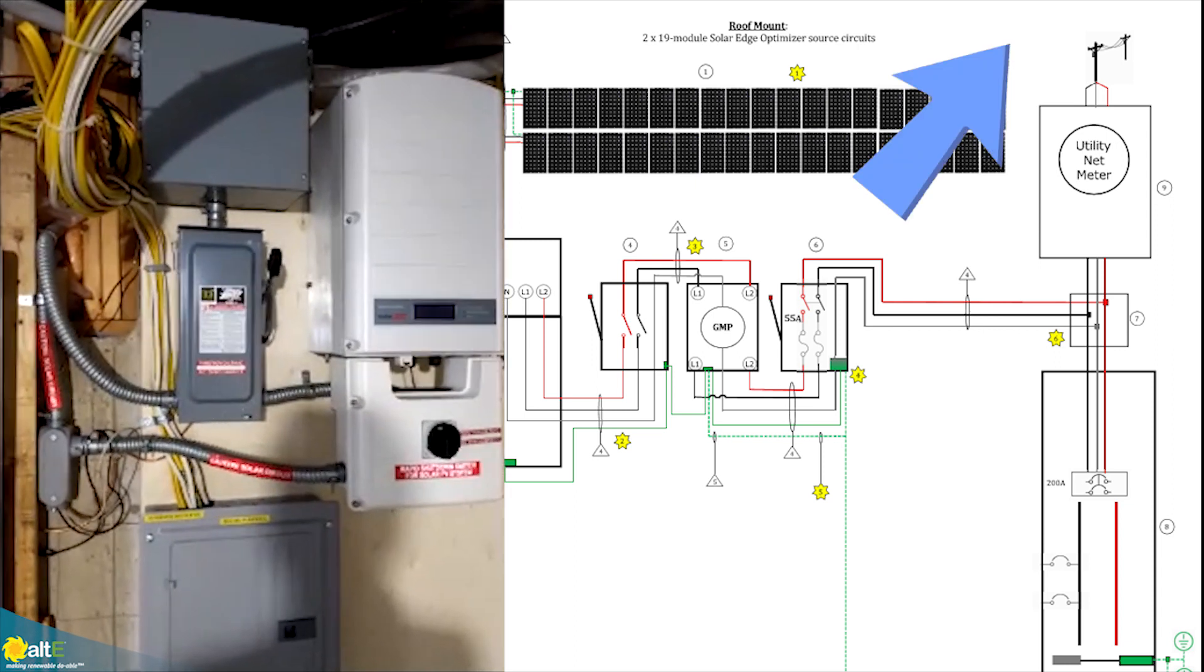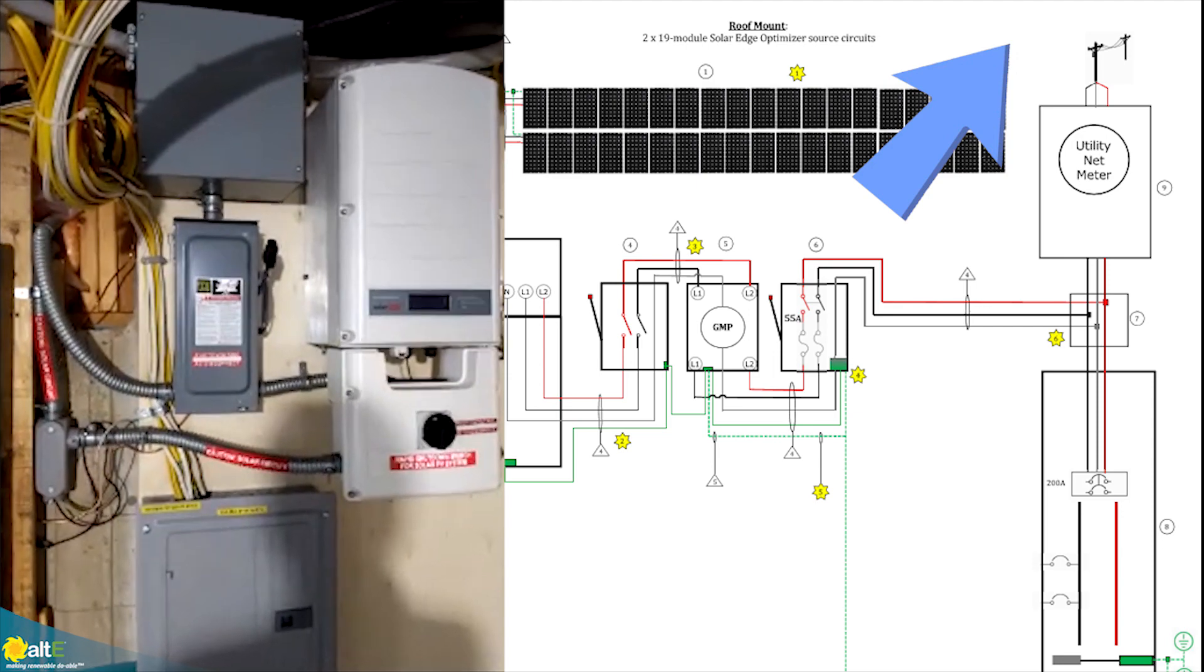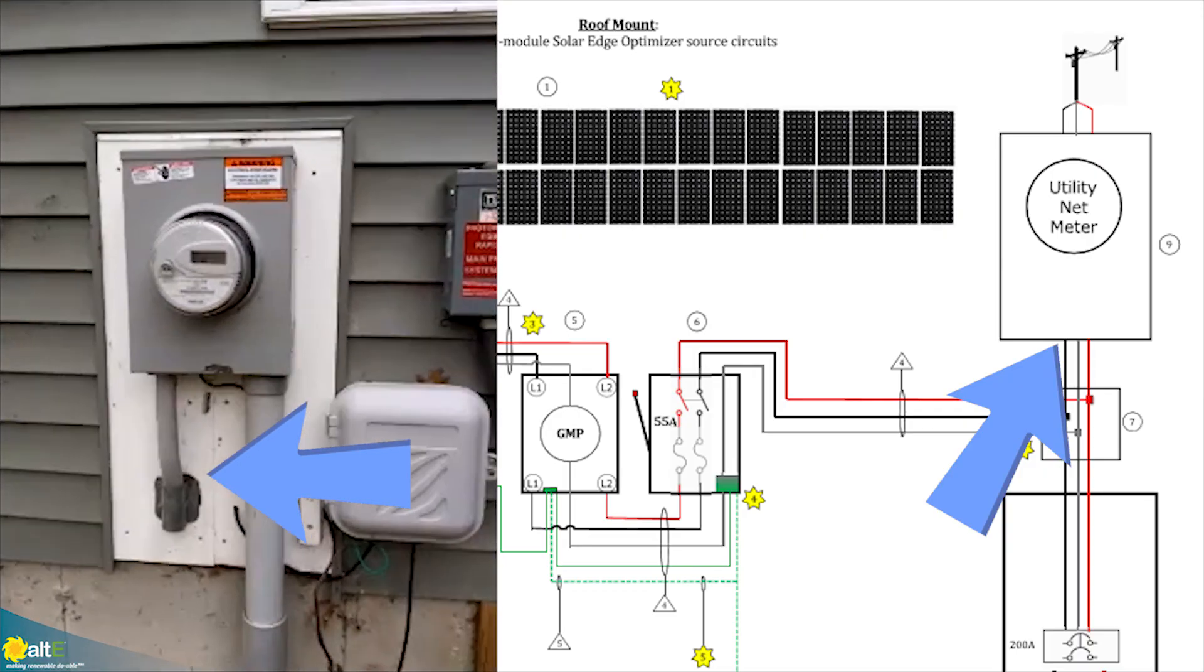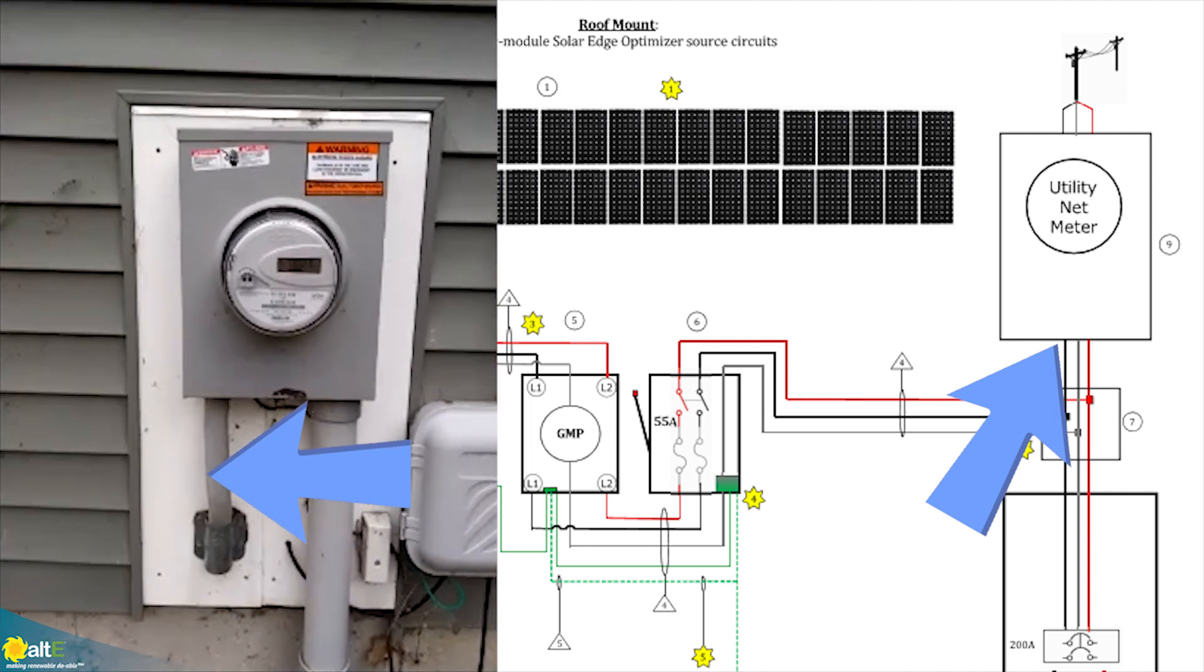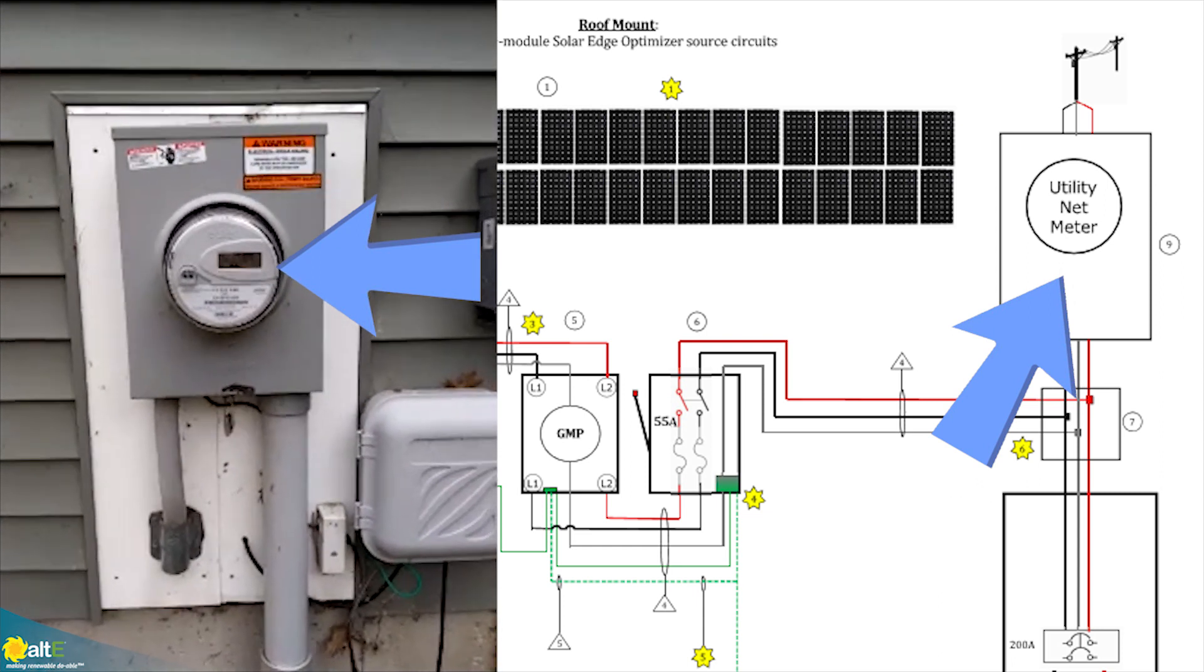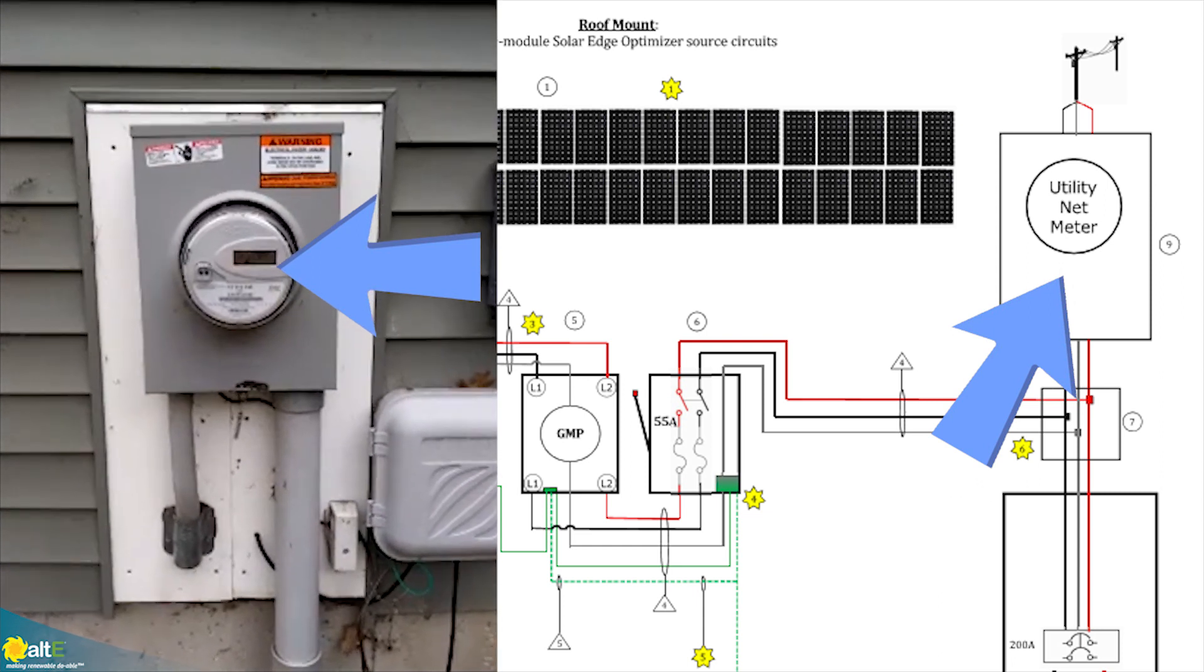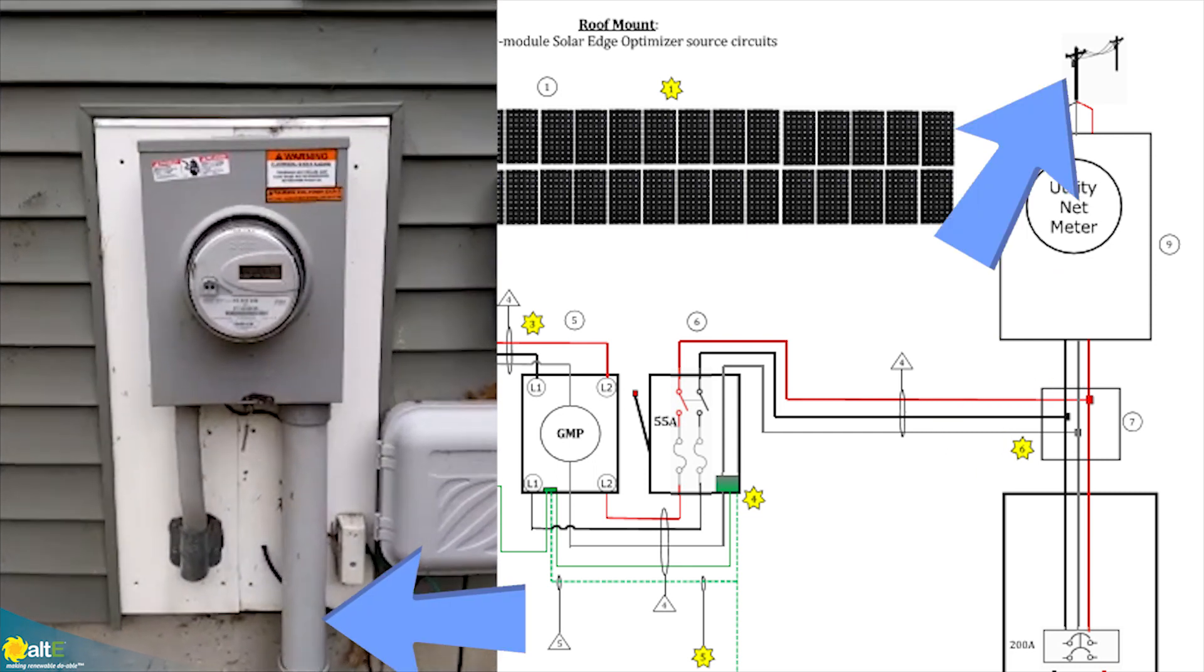Then from the line side tap, it's connected to the utility four aught service cable and GMP installed a bi-directional meter to regulate my output. Then that just goes off to the grid, goes off to the grid and reduces my bill. Thank you very much.